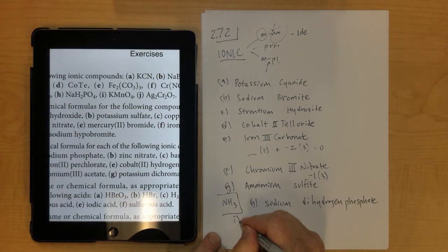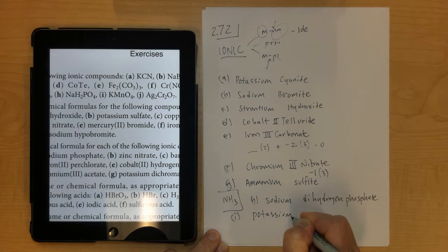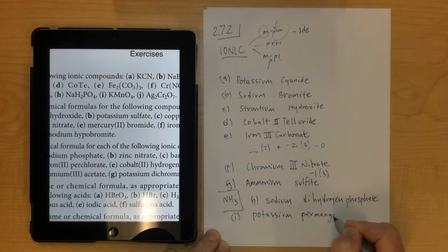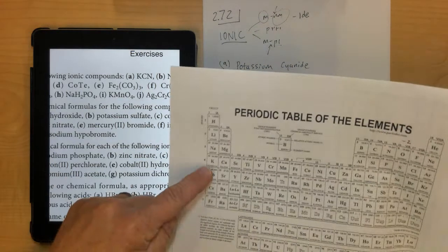Two more to go. Letter I is potassium, and then MnO4 is permanganate, and once again potassium doesn't need a Roman numeral, because it's in group 1.